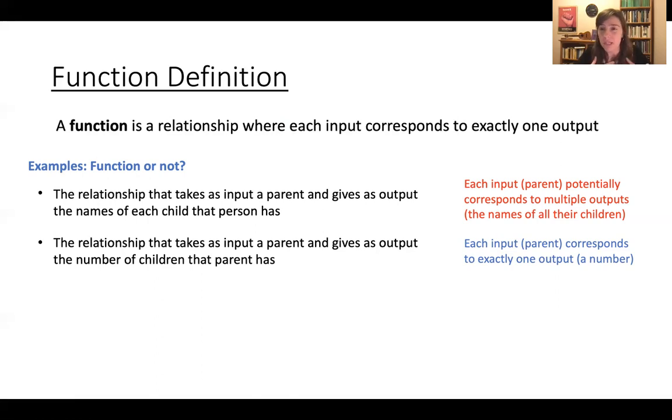And that's because each input, which is again, the input is a parent, corresponds to exactly one output. But that output is a number. And so you put in me, you get out the number one. You put in my mom, you get out the number three. Put in my brother, you get out the number three again. And so each input, you get one output that's corresponding to that. Me, one, my mom, three, my brother, three.